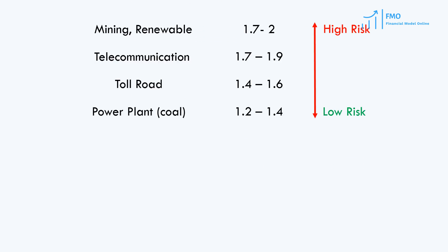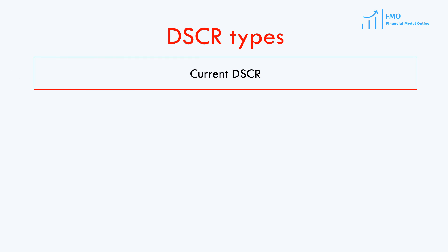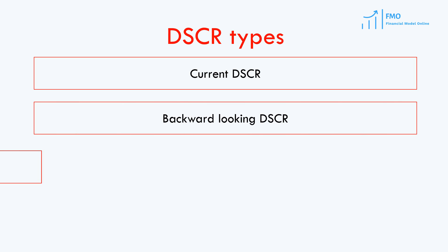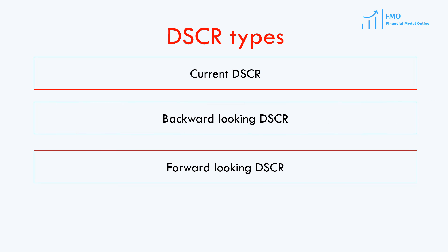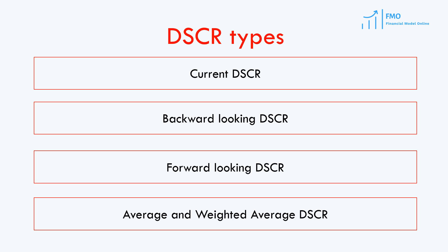The DSCR can be calculated using several different methods: Current DSCR, which is semi-annual CFADS over semi-annual debt service; backward and forward looking DSCR; and Average and Weighted Average DSCR.